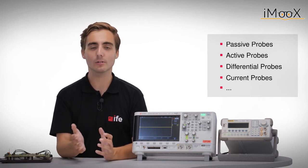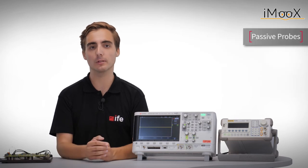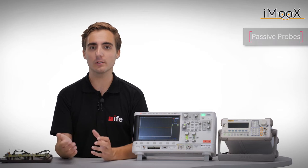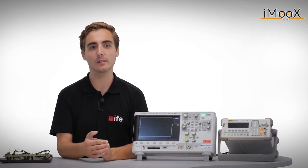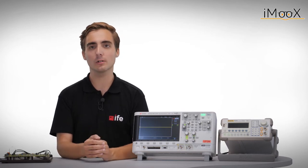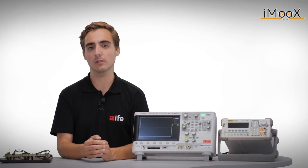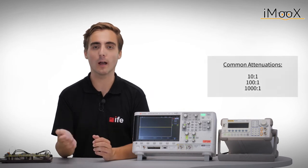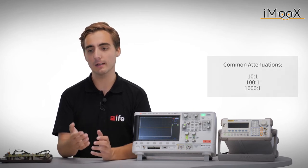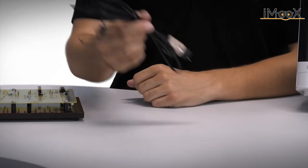Let us start with the most common type which are passive probes. These are used for general purpose measurements and only consist of passive components such as resistors or capacitances. They can propagate the signal without attenuation or with attenuation factors of usually 10, 100 or 1000 to the scope input. As an example, let us have a look at this 10 to 1 probe that I am holding in my hand.